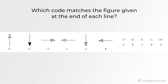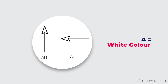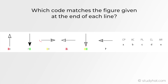Now let's move on to another question — which code matches the figure given at the end of each line? We need to find this figure here, so let's use the same methods as last time. Firstly, underline any repeating letters: A is repeated here and here, and you've also got B and C. Now we have to spot common links. Let's start with A — straight away you can see these two figures don't have the same direction. The one thing they do have in common is the shading or colour: they both have a white colour.